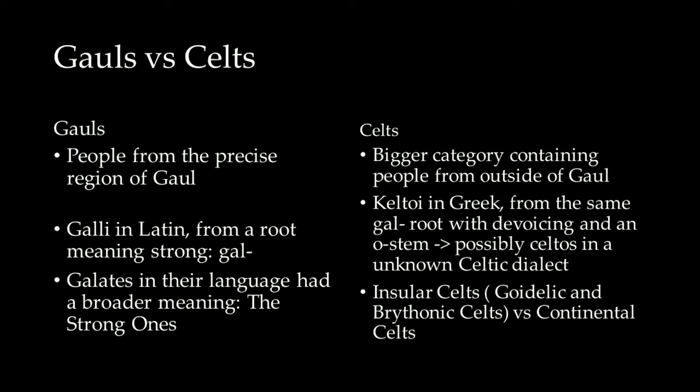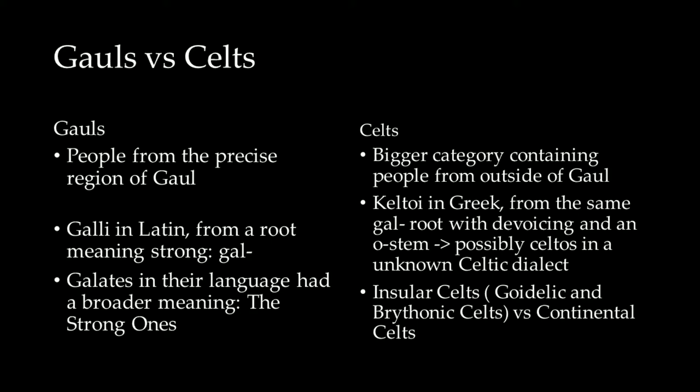First of all, we need to make a difference between the Gauls and the Celts. The Gauls are a small group inside the big category of Celts — they are people from the precise region of Gaul. The word comes from Gali in Latin. We also have the word Galates in Greek and Latin, which pertains to a certain category of Gauls who attacked Greece and Asia Minor. This word was surely the same in the Gaulish language and it had a broader meaning: the strong ones. The strong ones may be applied only to the raiders, like Vikings to the Scandinavians, or maybe it meant all of the Gauls, or what we call today Gauls.